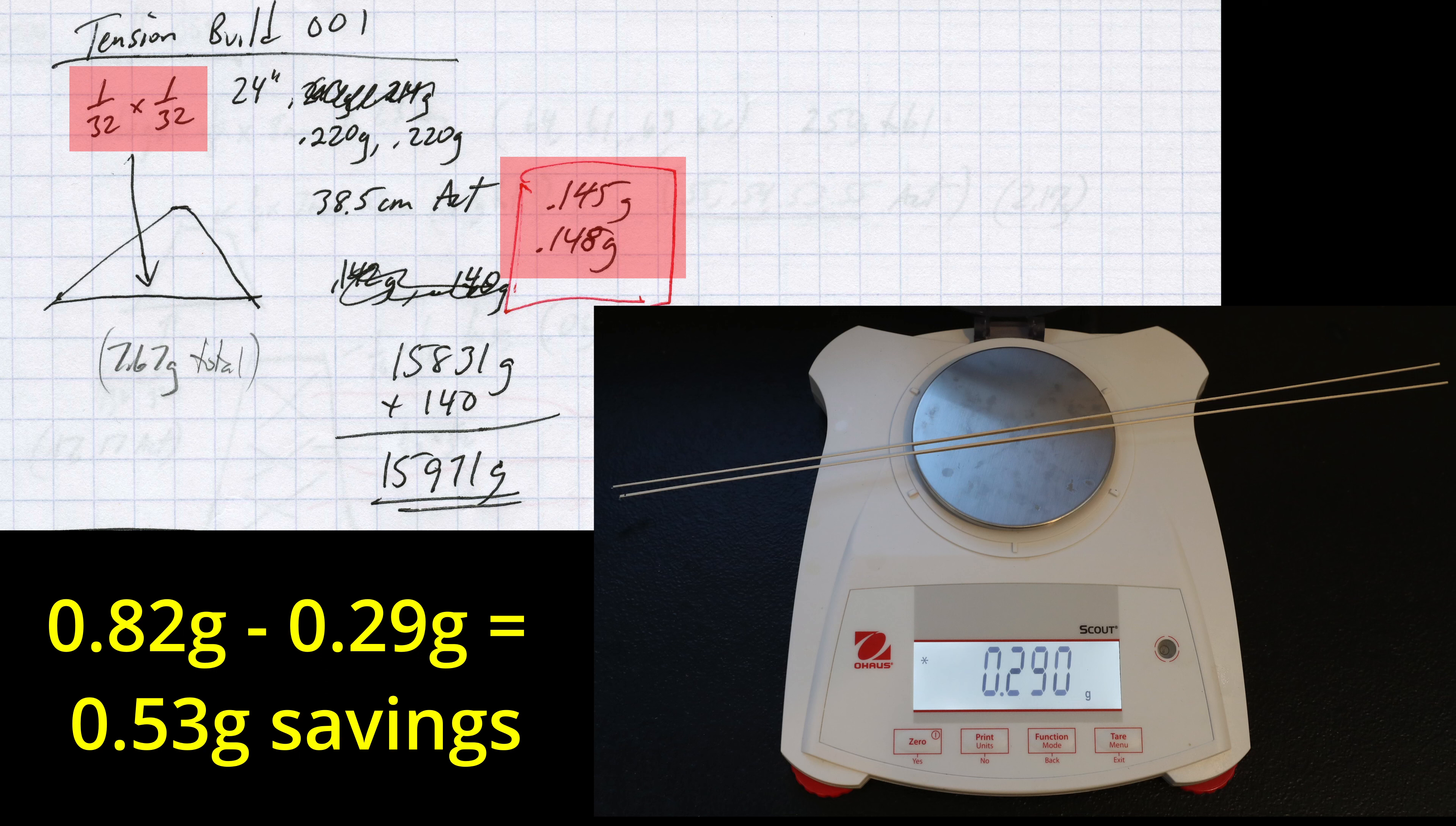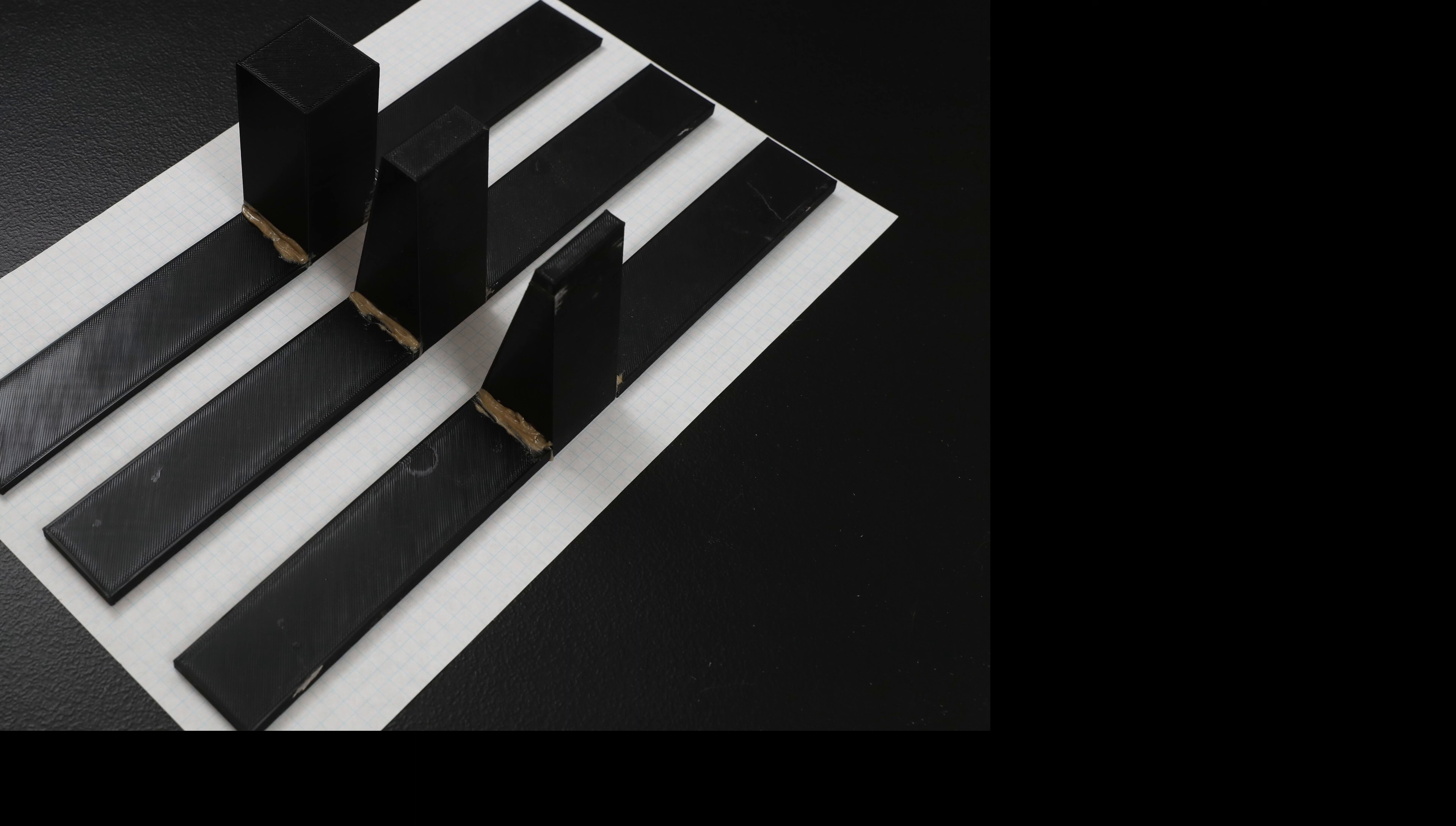For this build and the next several I moved to a slightly tapered design and was using the middle jig shown here. The goal of the tapered design was to try and minimize the amount of material needed for the cross bracing.